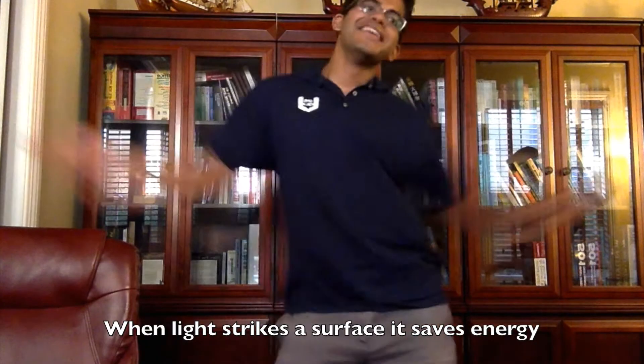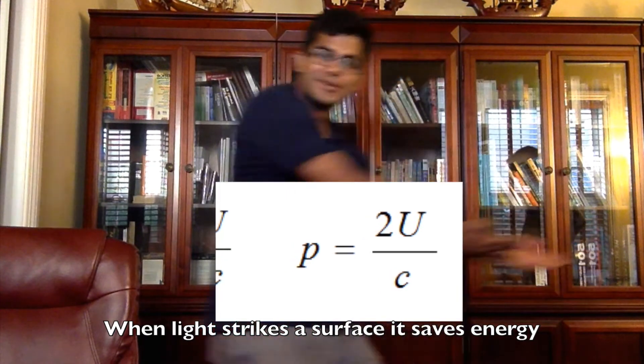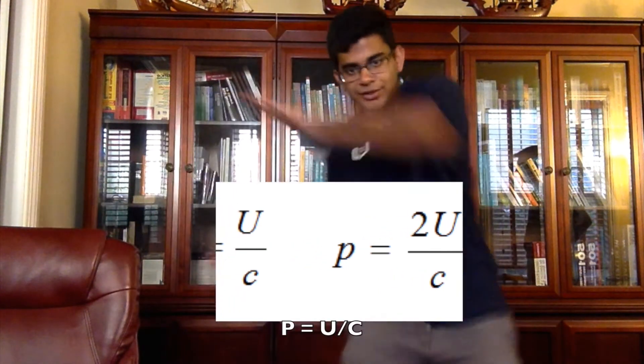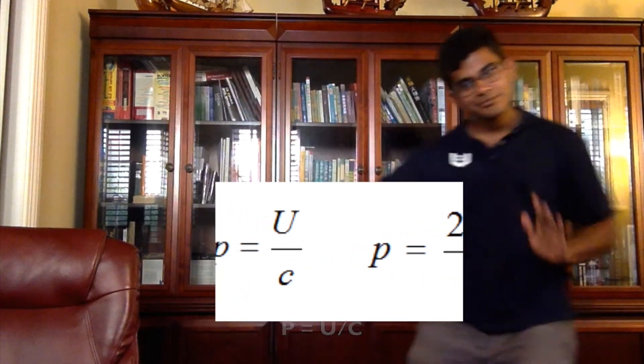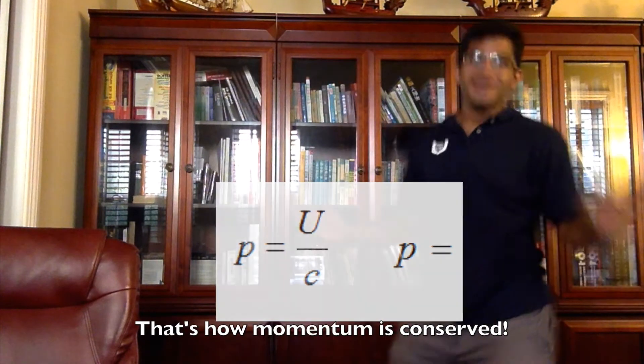When light strikes the surface, it absorbs energy. P equals U over c — that's how momentum is conserved.